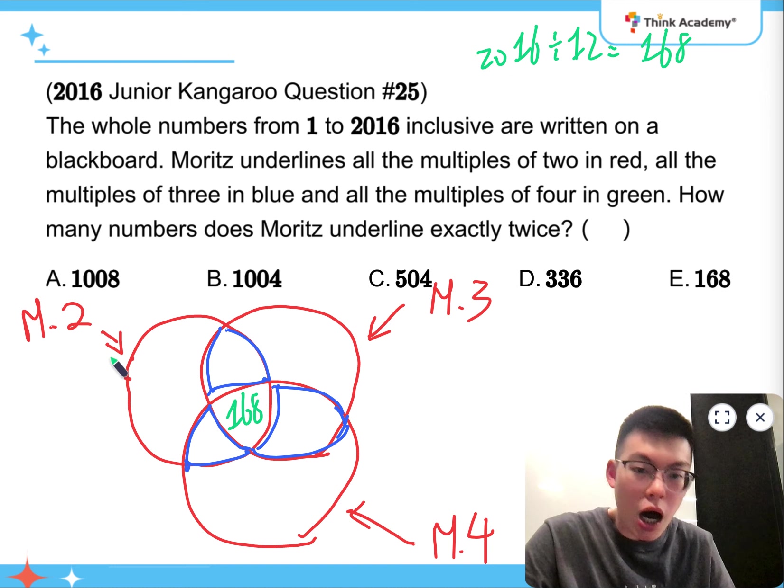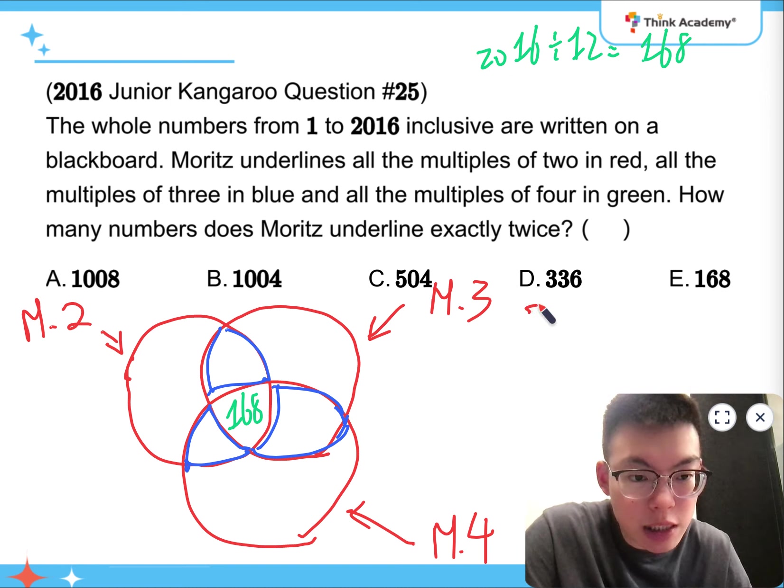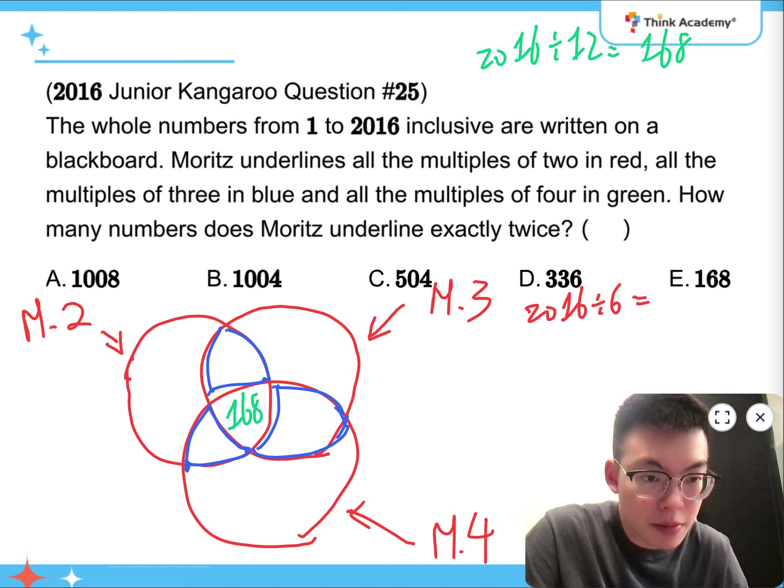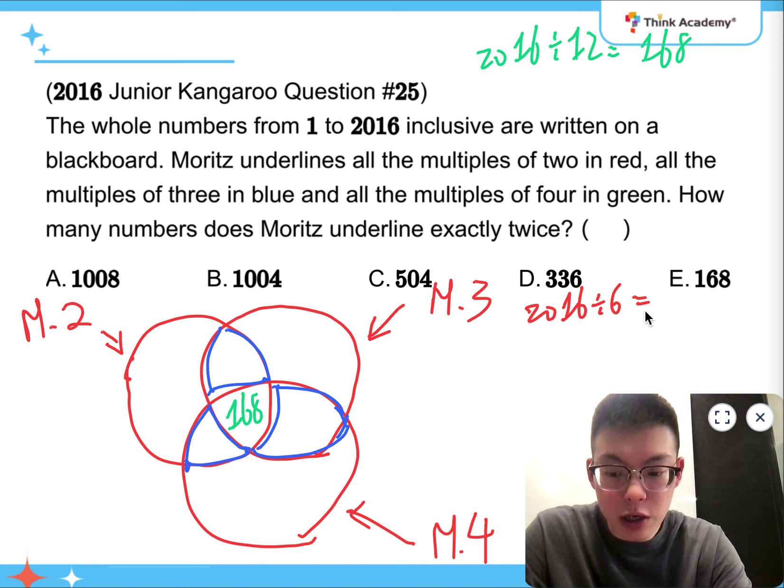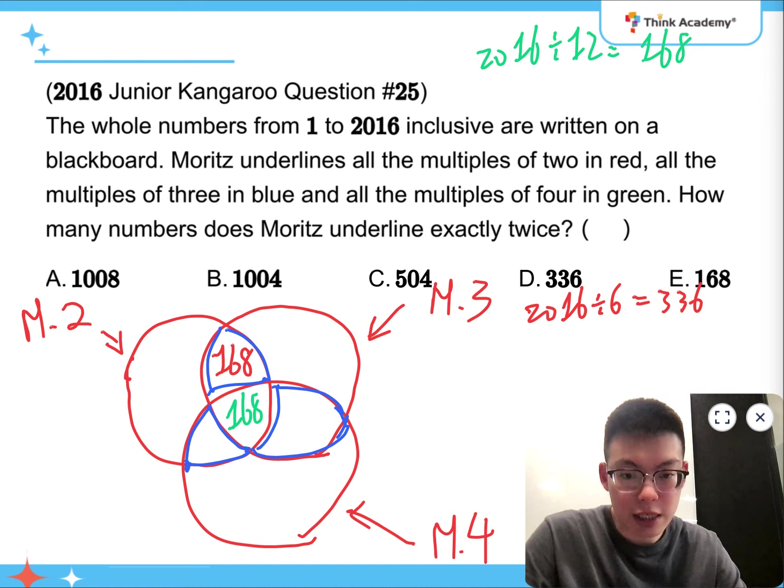Alright, and then, I'm just trying to look for these three zones. First of all, for 2 and 3 together, it's going to be 6, right? Like, the lowest common multiple is 6. But then, I want it to be underlined by 2 and 3, but not 4, which means that I need to remove the 168 there. So, for 2 and 3, I have 2016 divided by 6. And that's going to be 2 times of 168, which is 336. So, 336 removing 168 is just 168, right?